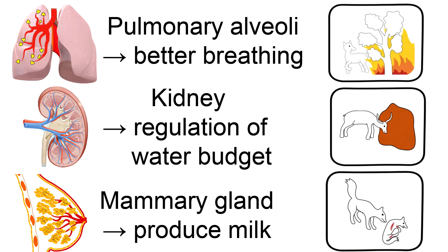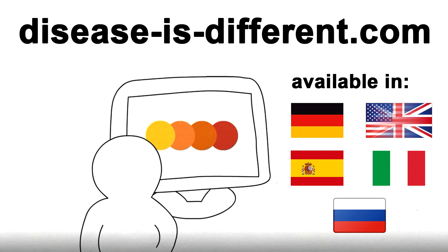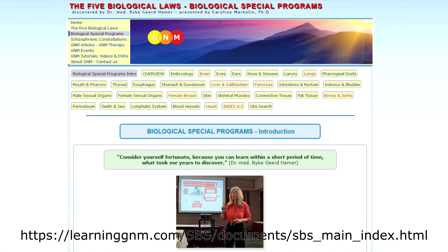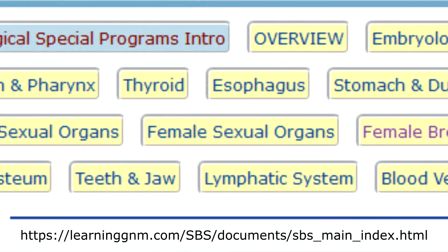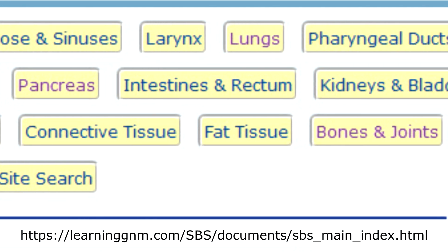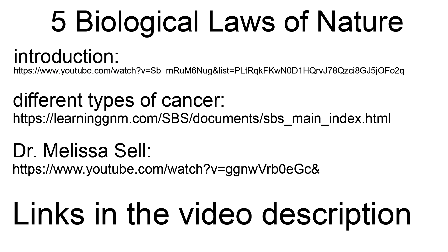These were just three examples of how cancer can develop. Cancer always arises from an individual conflict that is recognized as dramatic. And when that conflict is resolved, cancer almost never ends fatally. I promise you will never be afraid of cancer or bacteria again, if you look at the interesting video series of Disease is Different. But there are other English language websites that deal with the five biological laws of nature. In this website, many types of cancer are discussed. In addition, I recommend you this YouTube video of Dr. Melissa Cell. The links can be found in the video description.